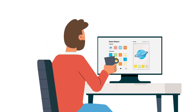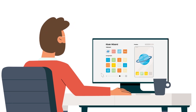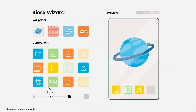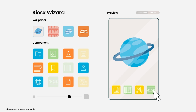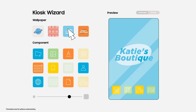How? By limiting devices to use a single app or multiple apps. You can create a kiosk by simply dragging and dropping apps or files into the preview screen — no complicated programming.